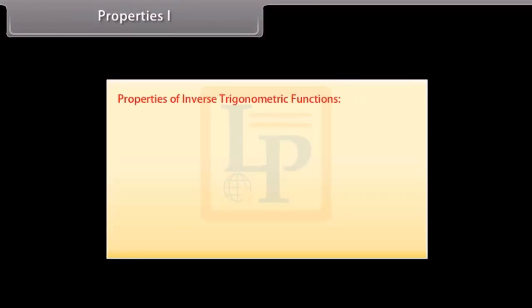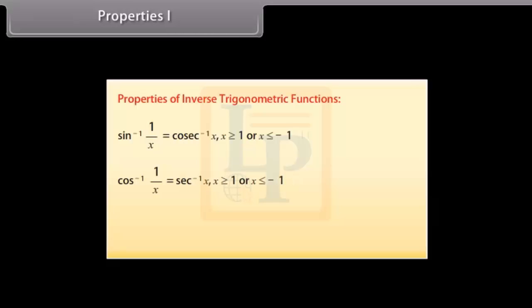Properties 1: sin⁻¹(1/x) = cosec⁻¹x, for |x| ≥ 1. cos⁻¹(1/x) = sec⁻¹x, for |x| ≥ 1. tan⁻¹(1/x) = cot⁻¹x, for x > 0.